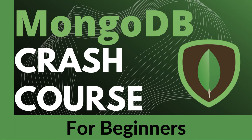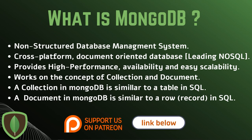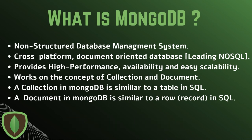MongoDB is a non-structured database management system. In SQL, which stands for Structured Query Language, you have a relational database where tables have primary keys and foreign keys all connected. MongoDB is different — it's a cross-platform, document-oriented database, meaning it works on Mac, Windows, or Linux. A document is the equivalent of a row inside a table in a relational database system.